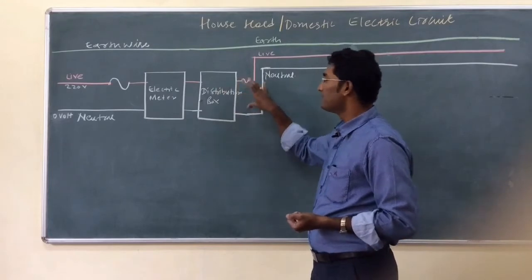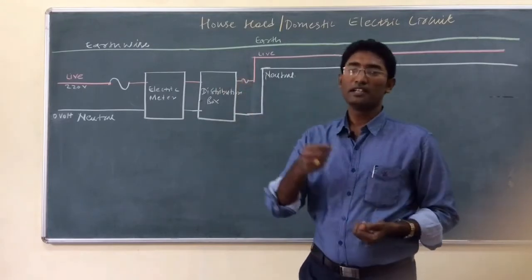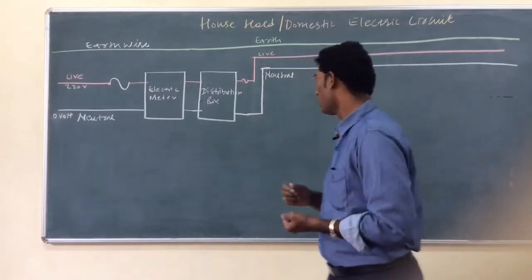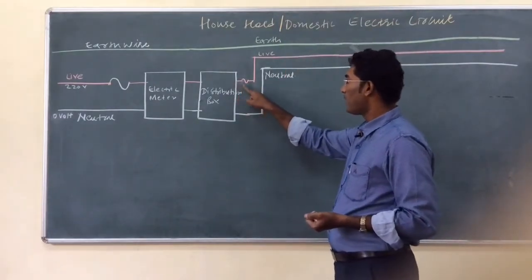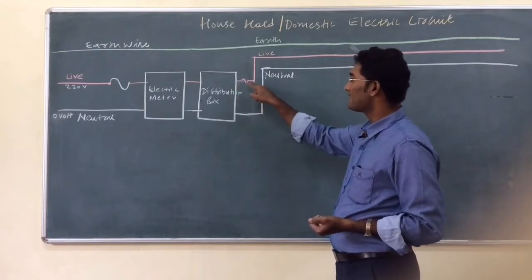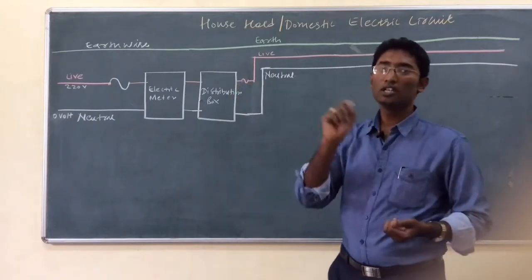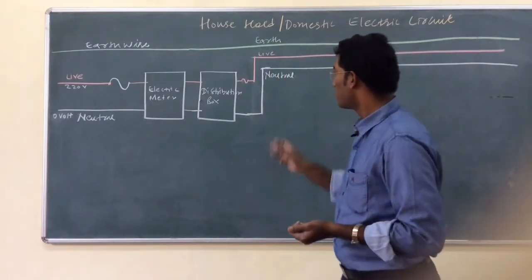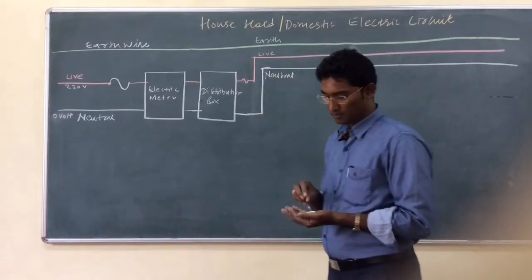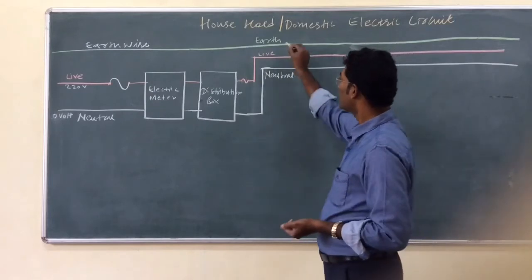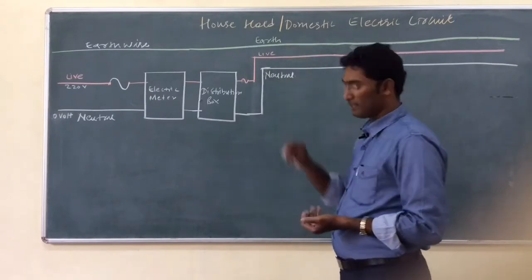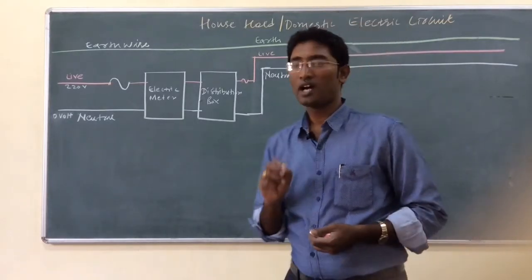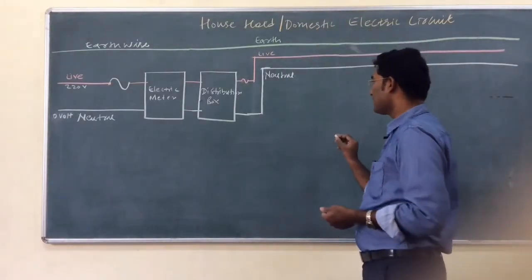After the electric meter, the live wire and neutral wire enter the distribution box. From the distribution box, these wires are sent to the different parts or rooms of the house. You can put an individual fuse for each room or one common fuse for all rooms. The earth wire, live wire, and neutral wire are all carried to each and every room of the house.